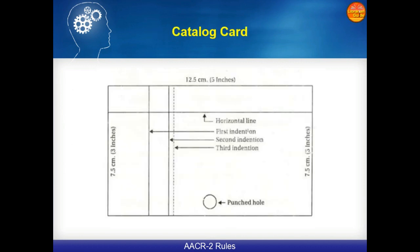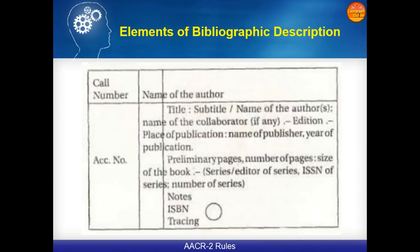This is the overview of the card catalog which libraries prepare in order to maintain the card catalog. Most libraries now use online catalogs, but those who use card catalogs — the size of the catalog card is 5 x 3 inches: 5 inches width and 3 inches height. We have certain rules where we accommodate information. At the top left corner we write the call number.